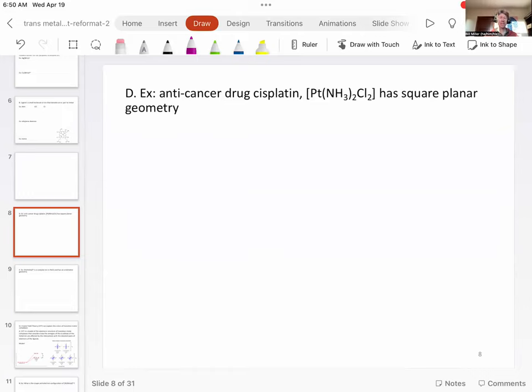Now, the anti-cancer drug cisplatin, shown here with its complex ion formula, has square planar geometry. A couple things about this: one is I do have to tell you this, although what you can know about this is that cisplatin is...